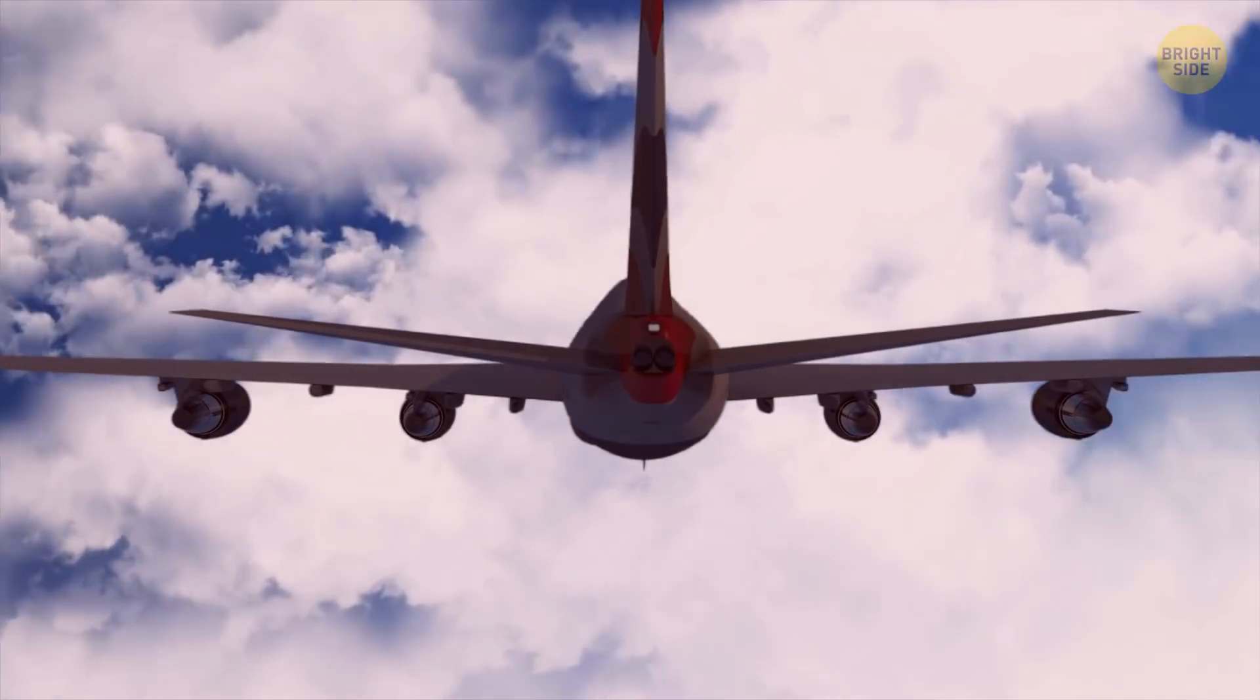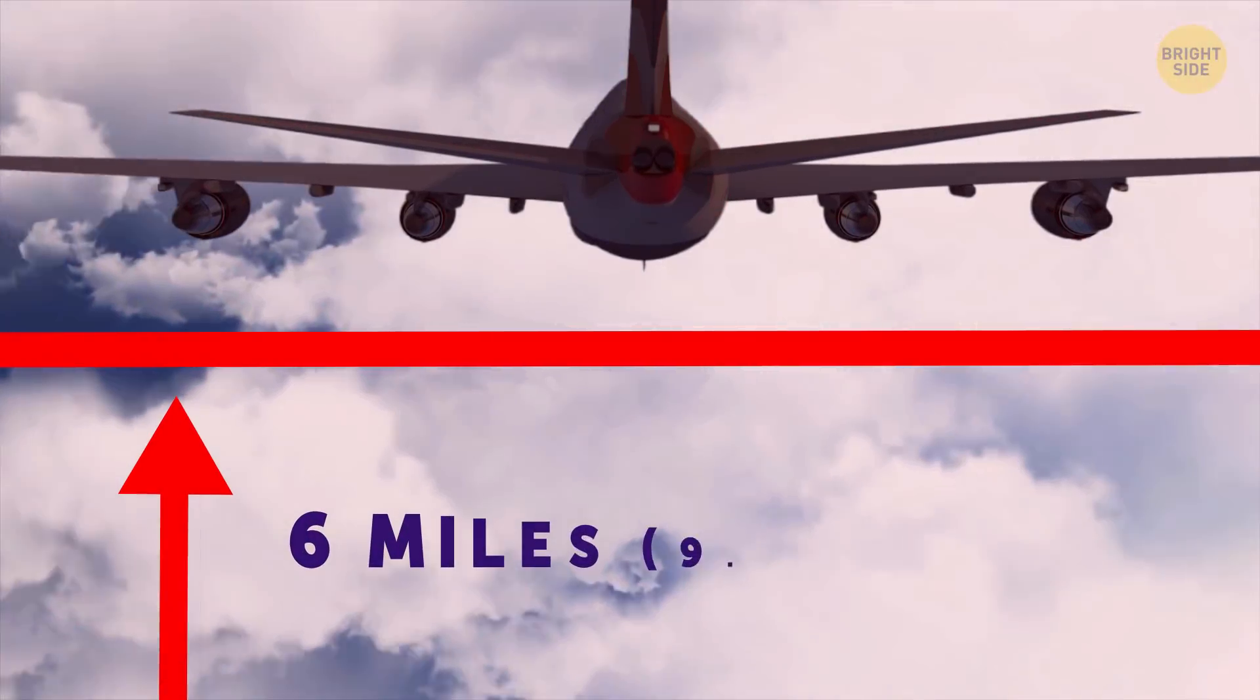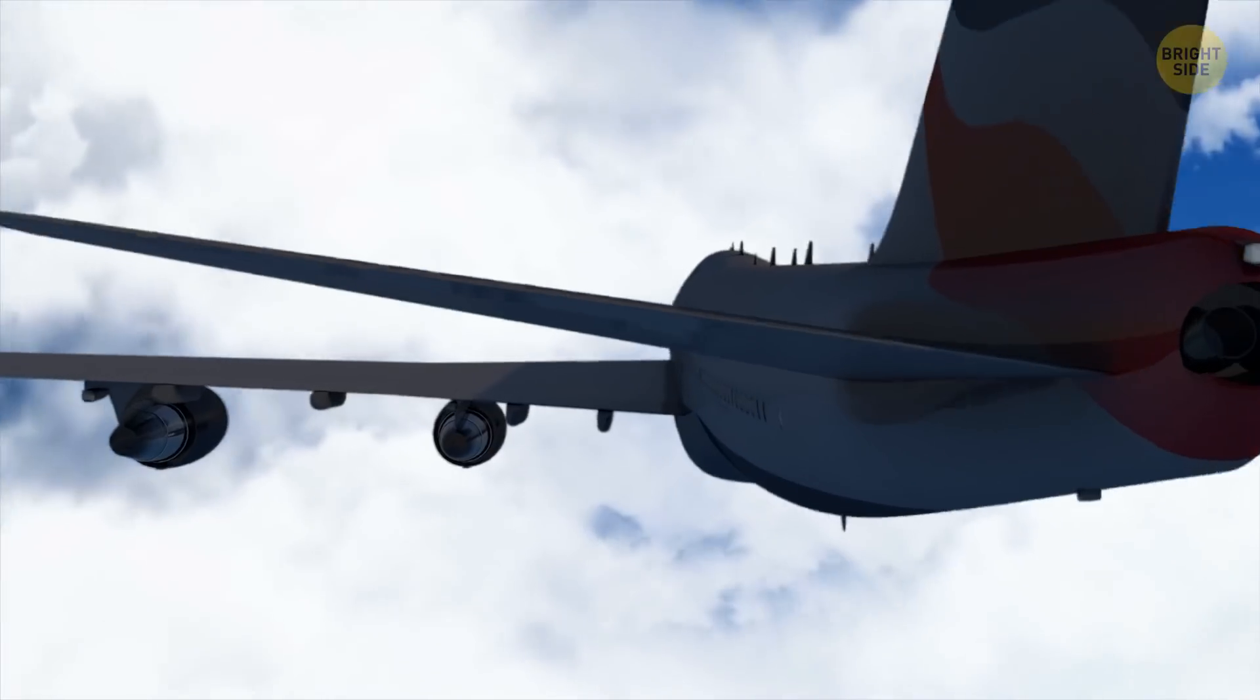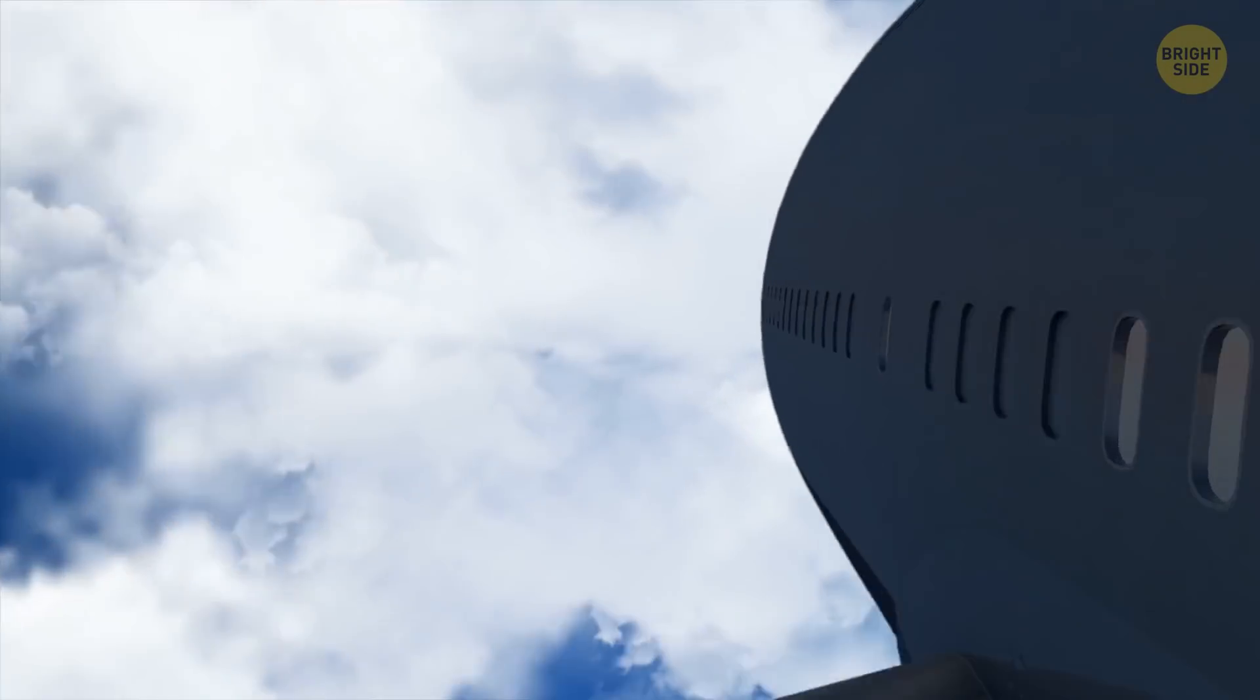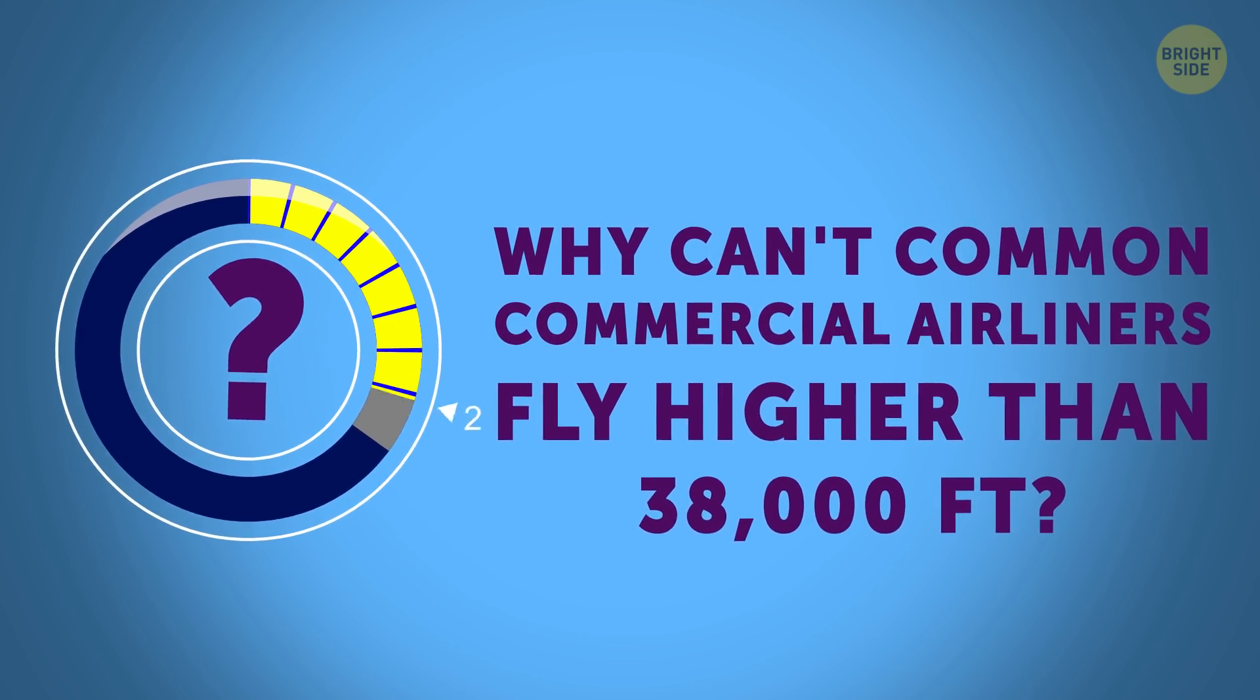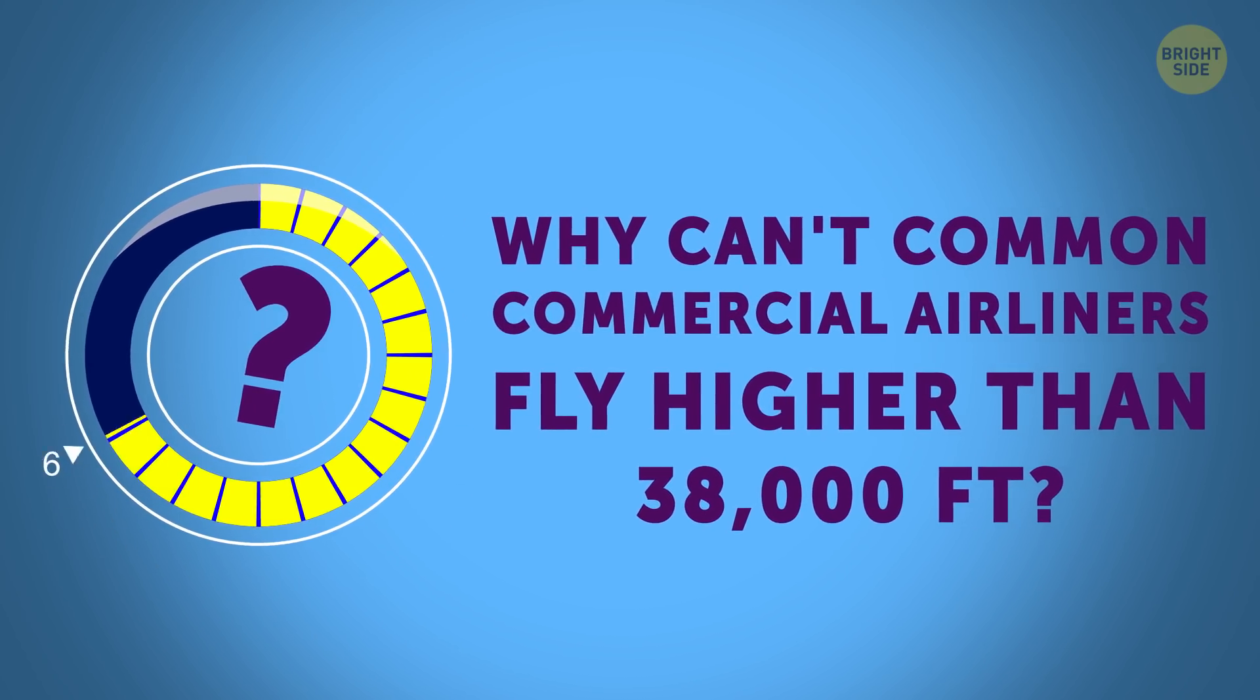And finally, if an emergency happens at a height of more than 6 miles up in the air, pilots will have more time to get their ducks in a row and figure out the best possible solution. And now, let's get back to the question, why can't common commercial airliners fly higher than 38,000 feet?